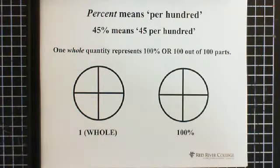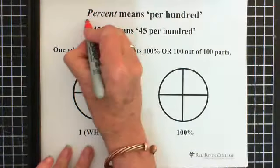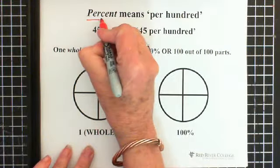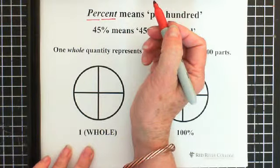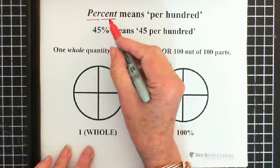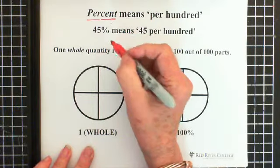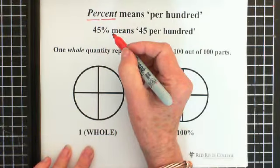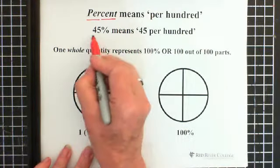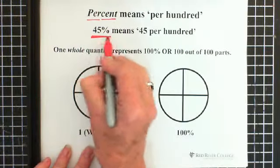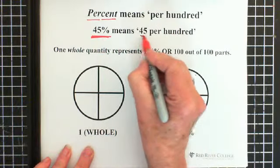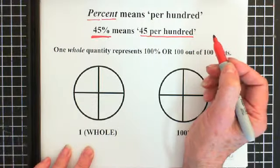When we're talking about percent, percent first of all means per hundred. So we're talking about parts out of a hundred parts. So 45% then means 45 out of a hundred.